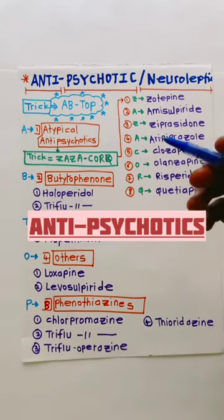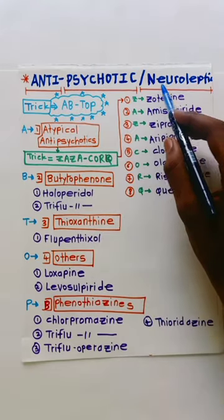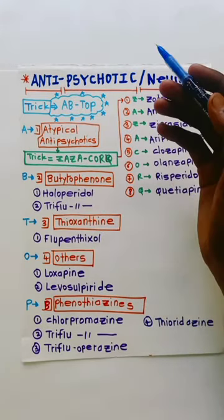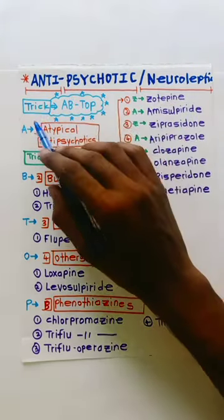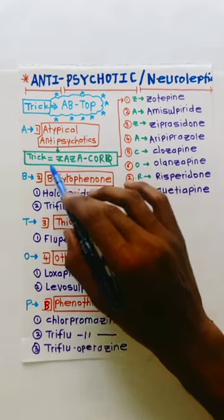Hello guys, I am Sudarshan, a third year MBBS student, and today's topic is antipsychotic or neuroleptic drug classification. The trick to remember this is AB-TOP: A for atypical antipsychotics,